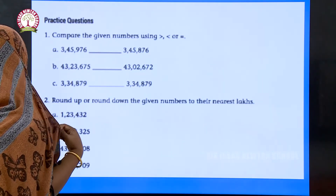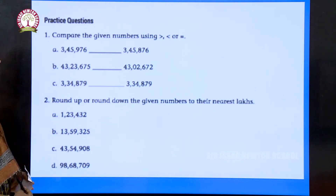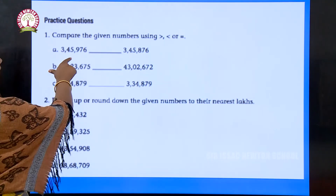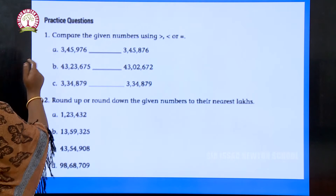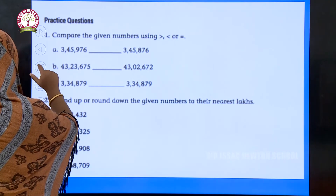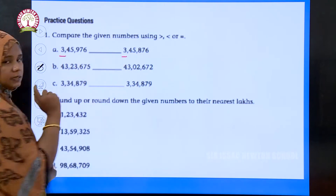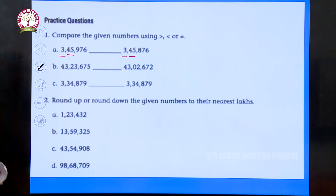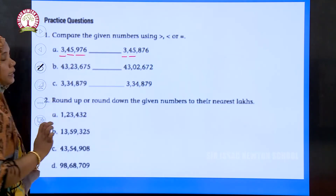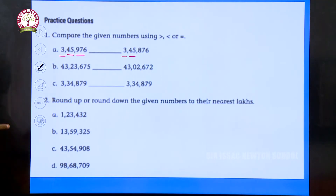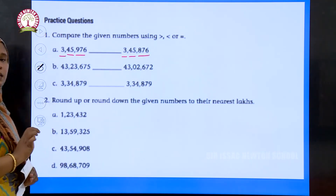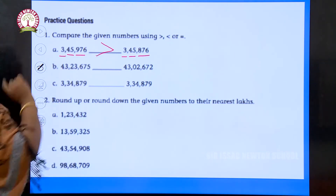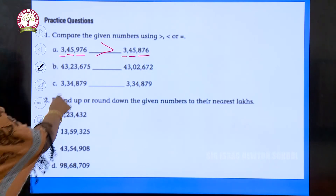Now, compare the given numbers using greater than, less than, or equal to. To compare numbers, consider them period wise — take the lakhs period first. If both have 3 lakhs, move to the thousands period: 45,000 equals 45,000 — equal. Then check the ones period: 976 versus 876. Since 976 is greater, we mark the greater-than sign.